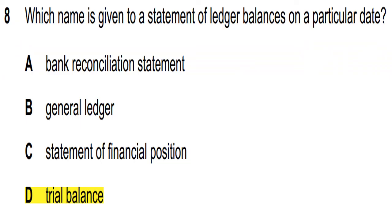Question 8: which name is given to the statement of ledger balances on a particular date? Option D is correct — trial balance — because a trial balance lists ledger balances on a particular date.